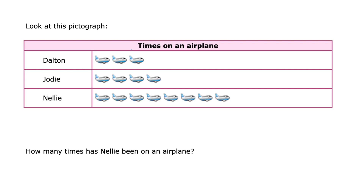This pictograph is titled 'Times on an Airplane.' That's really important — they've added a title so we know what the graph is all about, and then it shows how many times these different people have been on an airplane. The question is: how many times has Nellie been on an airplane? Why don't you pause, count, and then see if you get the right answer by pressing play again.